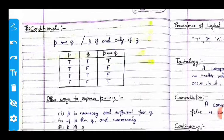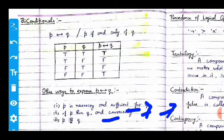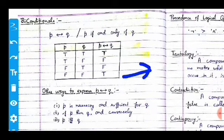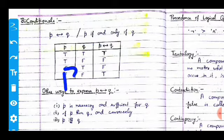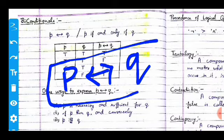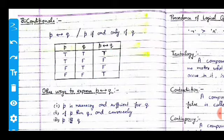Now we move on to the biconditional statement. The biconditional statement is represented with a double-sided arrow and is called 'p if and only if q.' It is also expressed as 'p is necessary and sufficient for q' and 'q is necessary and sufficient for p.' If p is possible then q is possible; otherwise neither statement holds.